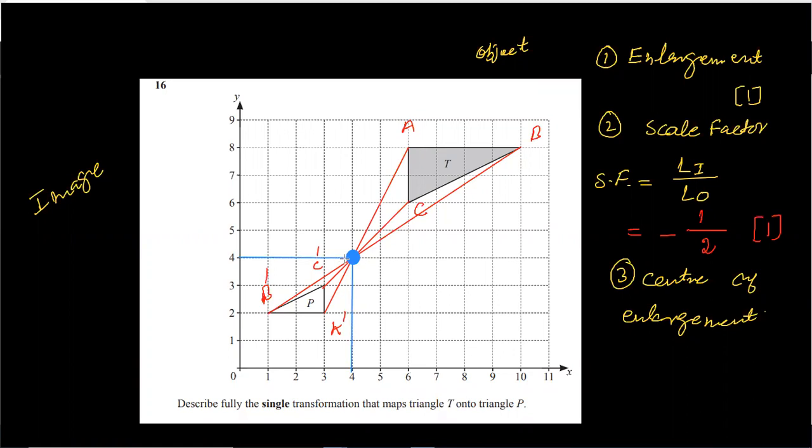Now at this point, you search the x-coordinate. Your x-coordinate is 4, and y-coordinate is again on x-axis 4. So in this way, your x-coordinate is 4, y-coordinate is also 4. So your center of enlargement is 4, 4. Center of enlargement will have one mark.